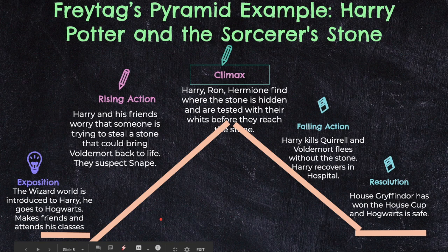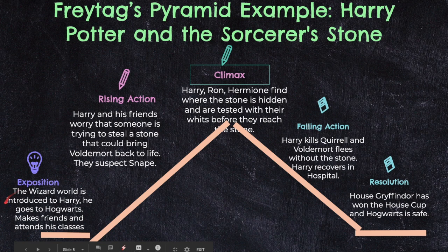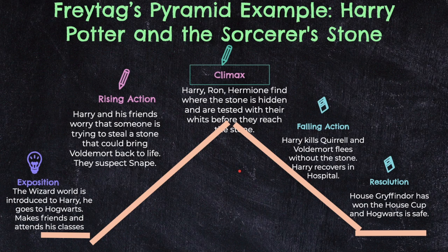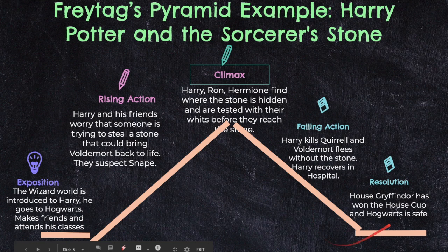I have an example from 'Harry Potter and the Sorcerer's Stone.' I had to severely shorten this because I can't include every single thing, but as a snapshot: we start with the wizarding world and are introduced to Hogwarts and magic. In the rising action, Harry and his friends start to worry about someone trying to steal the stone that could bring Voldemort back to life, and they suspect Snape. The climax is when Harry and Ron find where the stone is hidden and are tested — like playing live-action chess or Harry catching a key on a broom. The falling action is when Harry defeats Professor Quirrell and ends up in the hospital. The resolution is when Gryffindor wins the house cup and Hogwarts is safe.